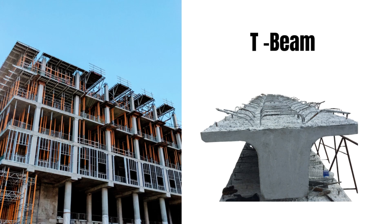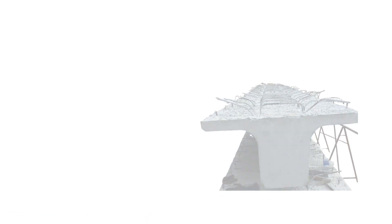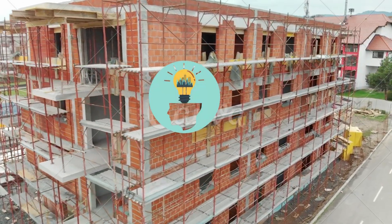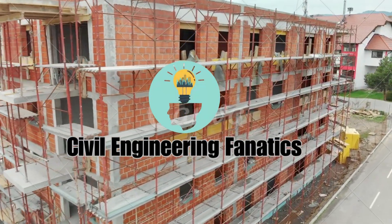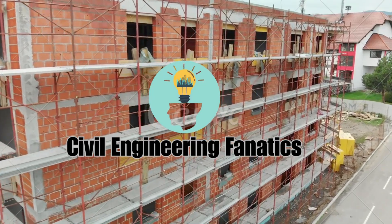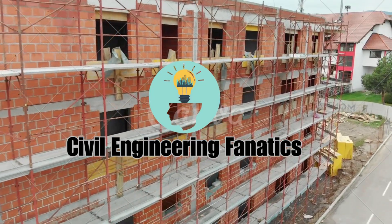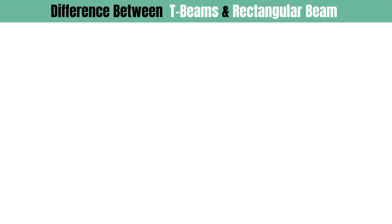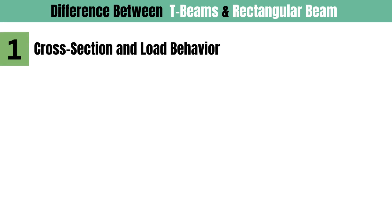Let's break down the differences between rectangular beams and T-beams, focusing on their cross-section, load-bearing capacity, and structural behavior under bending and shear — understanding rectangular and T-beams based on cross-section and their load behavior.